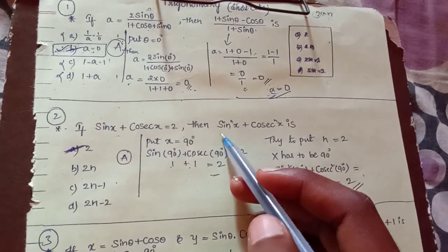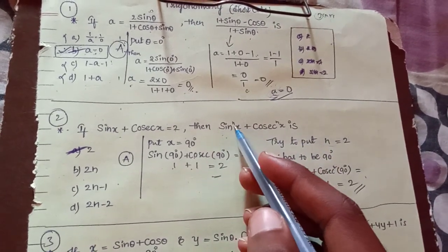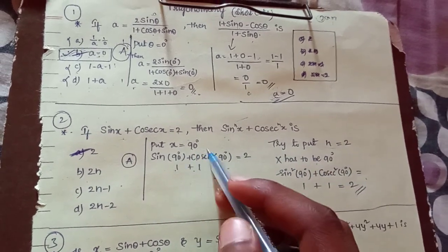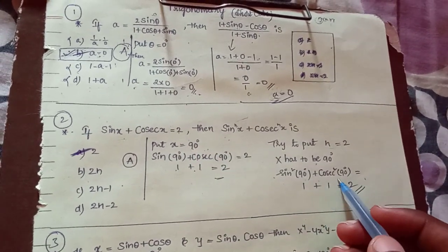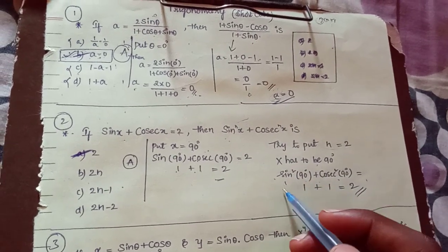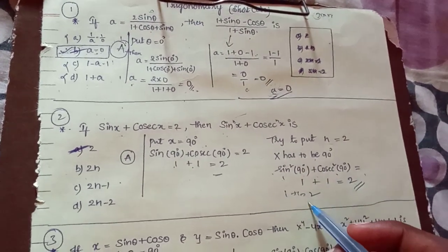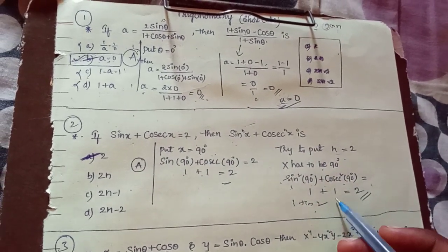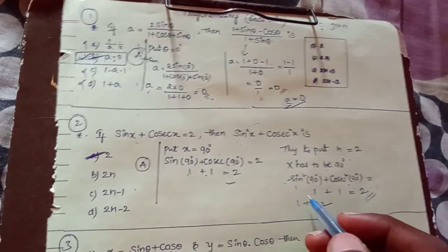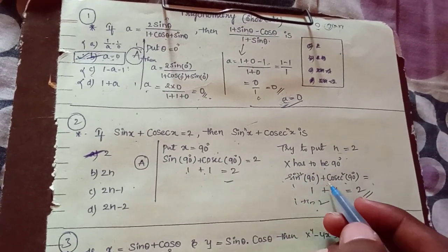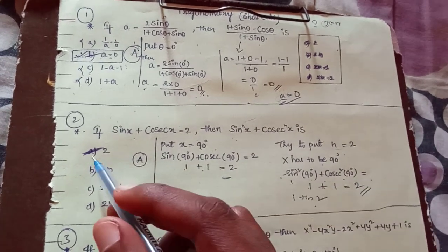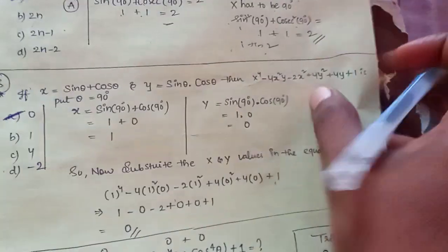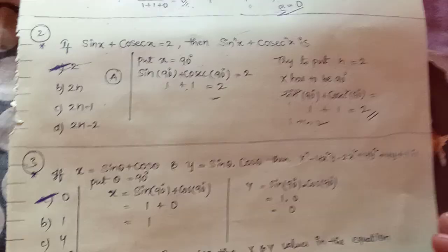Now try putting n equal to 2: sin squared 90 degrees plus cos squared 90 degrees gives 1 plus 1 equal to 2. Then for n equal to 3: sin cubed 1 plus cos cubed 1 gives 1 plus 1 equal to 2. So in both cases the answer is 2.